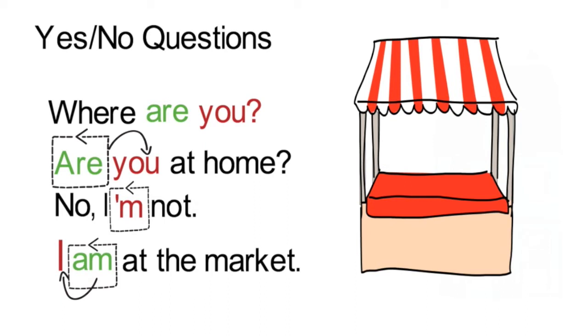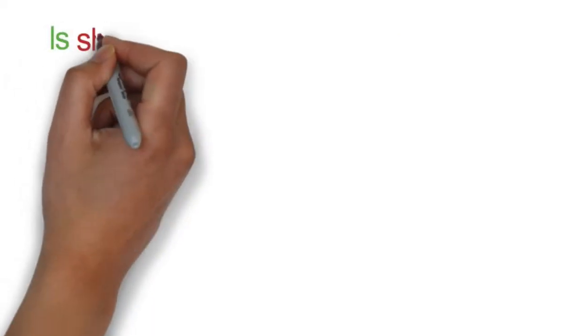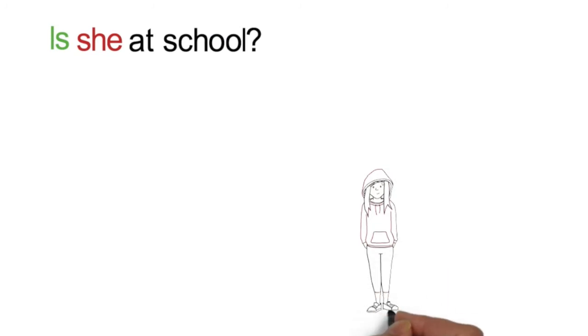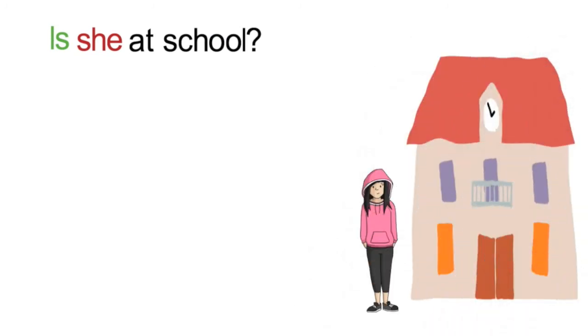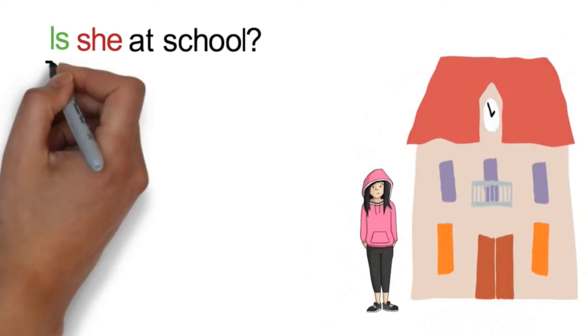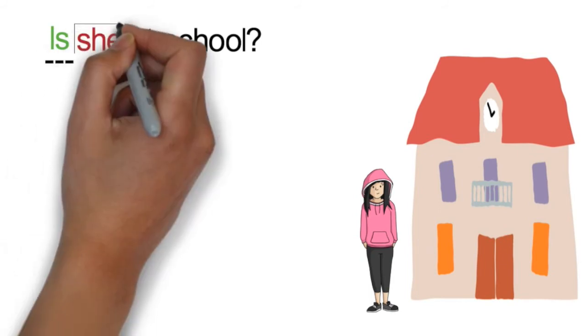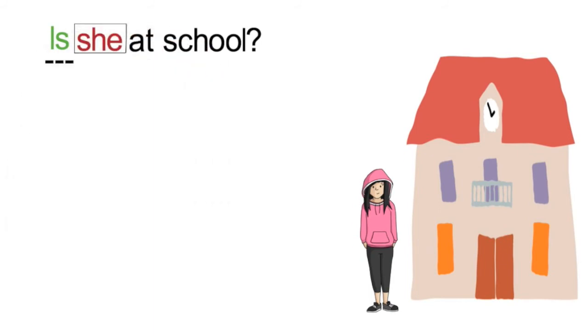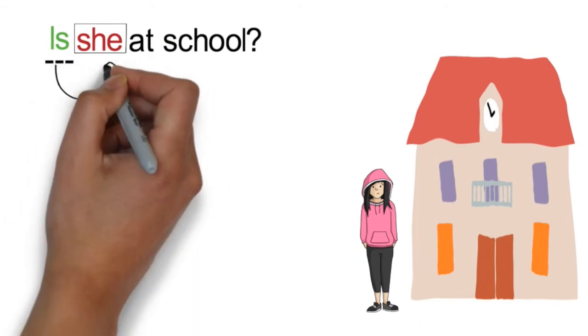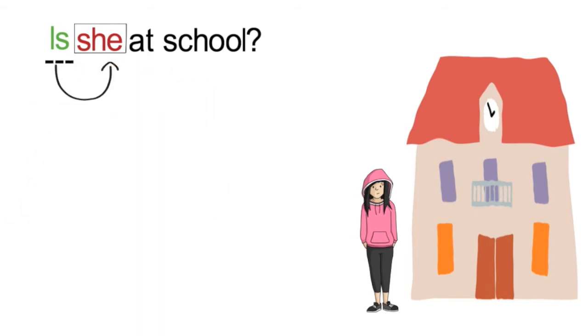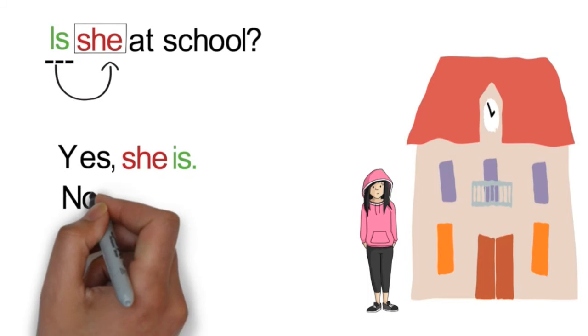Another example of using the verb to be in a yes or no question is Is she at school? Notice that the verb to be, which is is, starts the sentence and the subject she follows. Is is the correct form for she. The answer could be either yes she is or no she isn't.